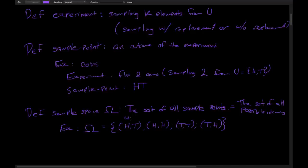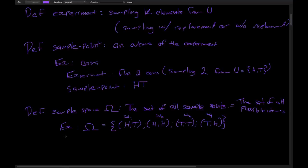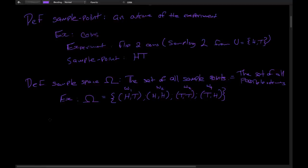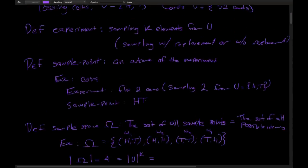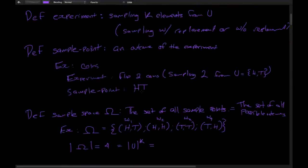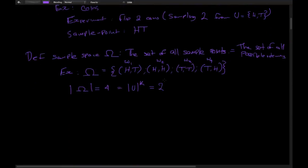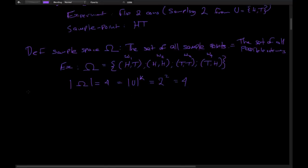Let's call each member of omega: omega-1, omega-2, omega-3, and omega-4. A thing to notice is that the cardinality — the size — of the set omega is equal to 4, which also happens to equal the cardinality of U raised to the power K, where K is the number of times we sampled from U. That's 2 squared, which equals 4. In general, when you're sampling with replacement, you should see something that looks like this.